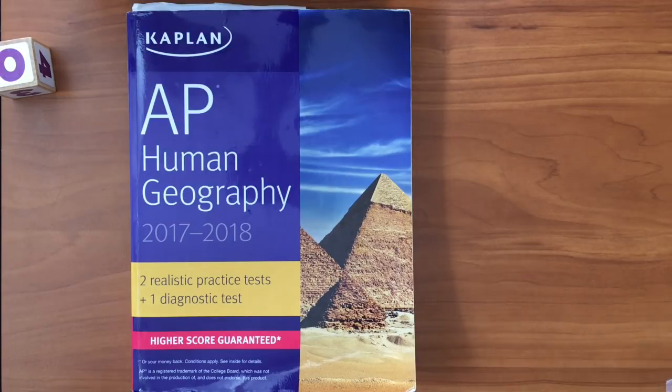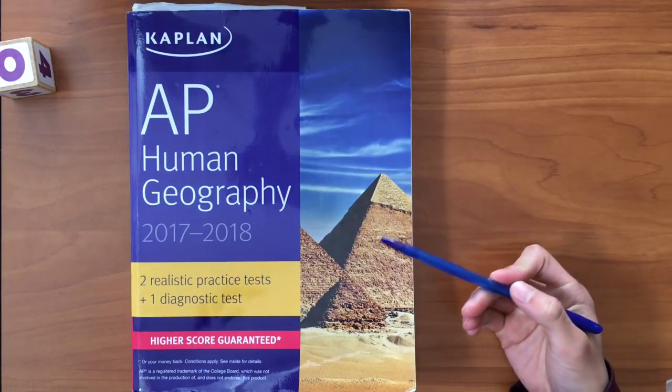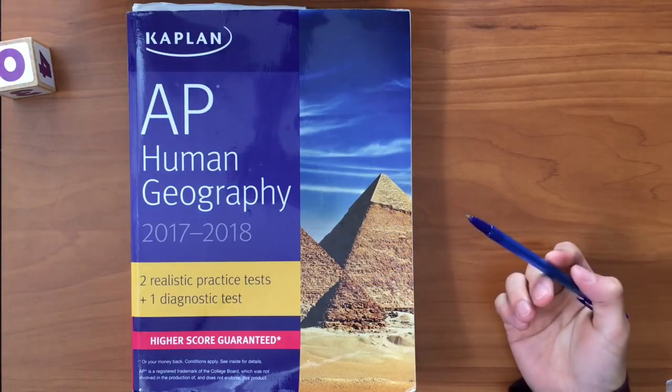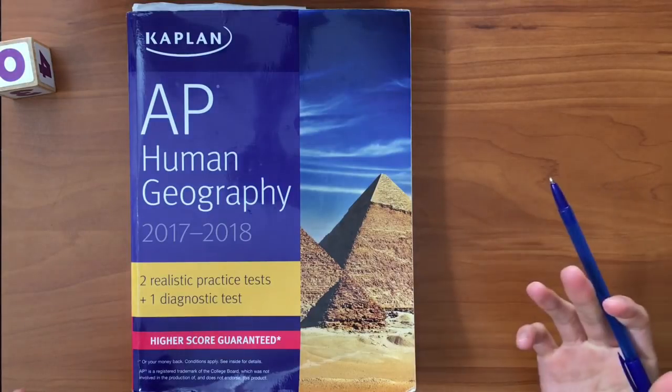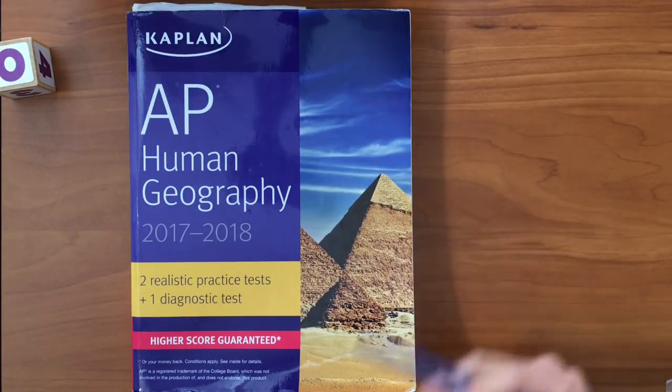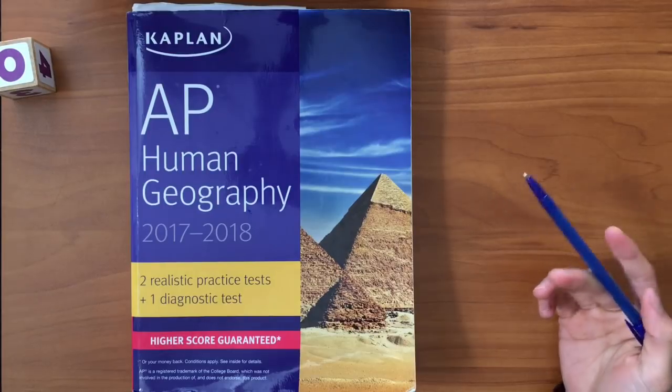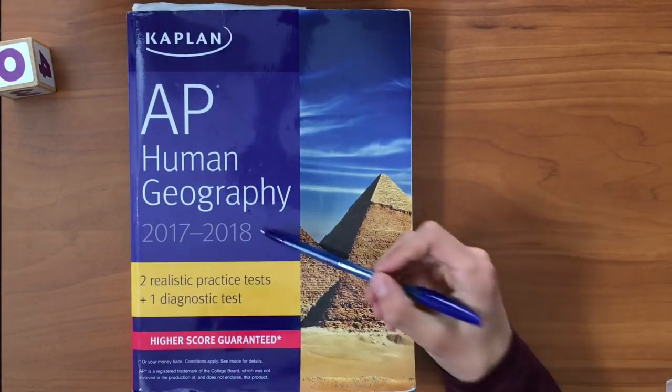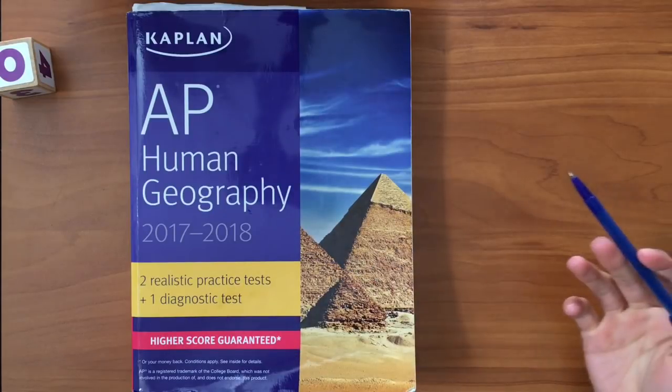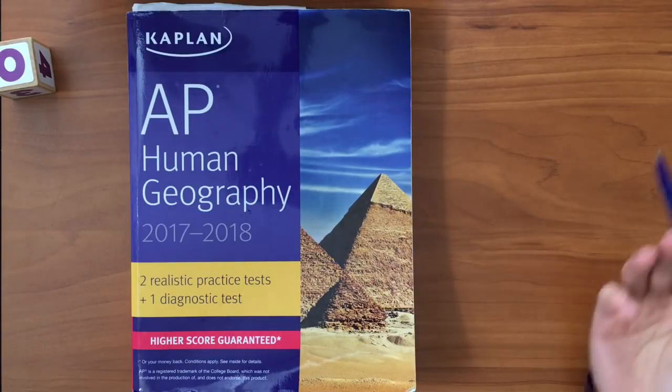So you can recap everything you've learned and be well prepared for the exam. You can get this or you can also get a Barron's, which has a green border around the edge, or a Princeton Review, which has a gold edge. For the Kaplan and the Princeton Review, there will be year numbers, so you want to get the newest edition, which will probably be 2018 to 2019.